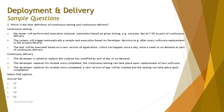For continuous delivery, the options are: 1 — the developer is asked to replace the code he has modified by end of the day or on demand; 2 — the developer replaces his module once completed, and continuous testing can take place upon replacement of the new software; 3 — the developer replaces his module once completed, a new version of the app will be created, and testing can take place upon completion. Statement 1 is not correct because simply replacing code on demand is not the right approach. Statement 2 is also wrong.